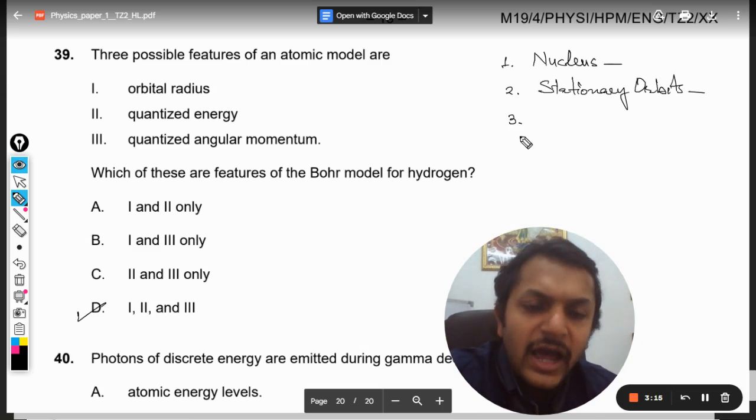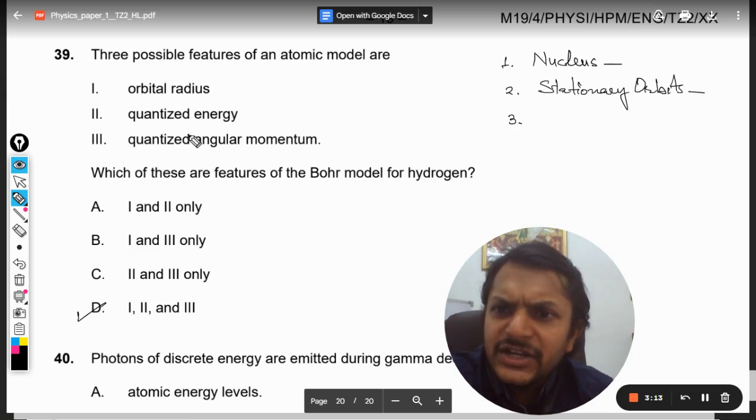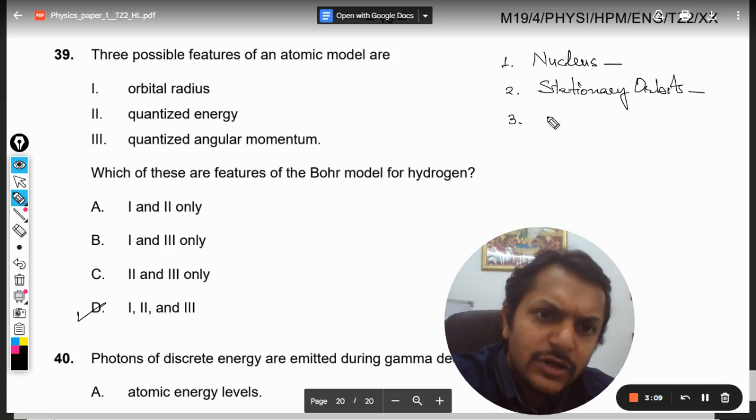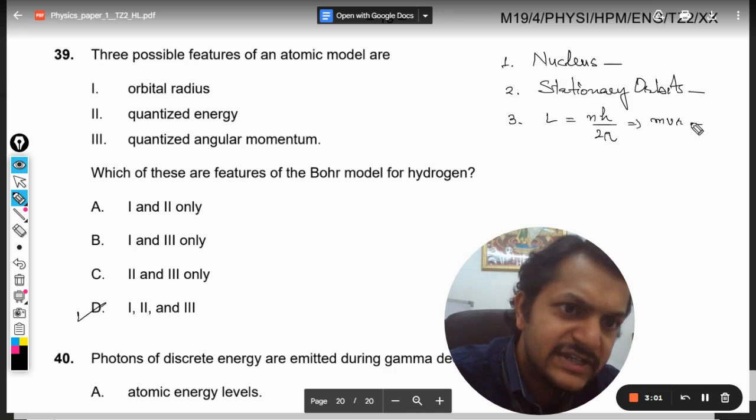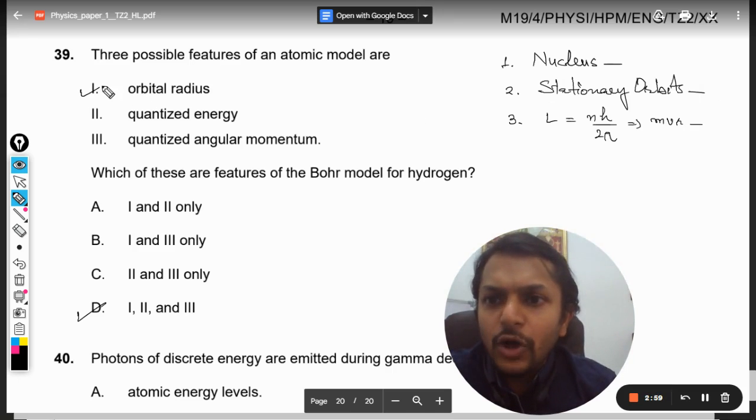So these are called stationary orbits. Number three is the condition of angular momentum. So according to it, the angular momentum is always an integral multiple of h by 2 pi.